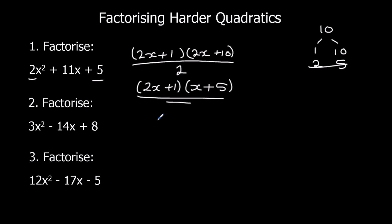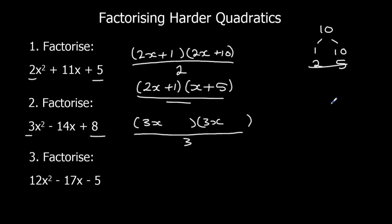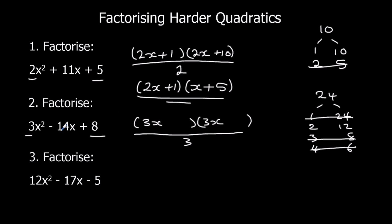Second one: we've got 3x squared, so put 3x in each bracket and write it over 3. First times last: 3 times 8 is 24. Factors of 24: 1 and 24, 2 and 12, 3 and 8, 4 and 6. How can I make negative 14? Can't use 1 and 24, 3 and 8, or 4 and 6, so it's 2 and 12. I need negative 14, so it's negative 2 take away 12. I can't divide the first bracket by 3, so I leave it. For the second bracket: 3x divided by 3 is x, and 12 divided by 3 is 4.